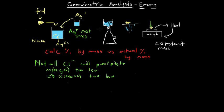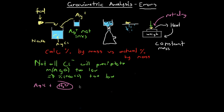Another error that can occur is if, as we filter and heat the silver chloride precipitate to constant mass, it is not fully dry when we take our final weight. If we haven't heated to constant mass and there's still water in the silver chloride, we'll have the correct amount of silver chloride plus some H₂O molecules. This extra mass due to the water means our measured mass of silver chloride will be too high, because we'll mistake the water mass for extra silver chloride.